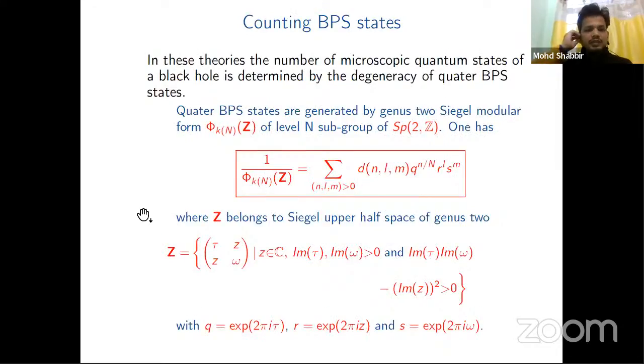Now we count the BPS states. In this theory, the number of microscopic quantum states of a black hole is determined by degeneracy of quarter-BPS states. Quarter-BPS states are generated by genus-two Siegel modular forms Φ_k,N, where k depends on N and k is also the weight of level N subgroup of Sp(2,Z). One has this relation: the generating function for the degeneracies where Z belongs to Siegel upper half space of genus two.